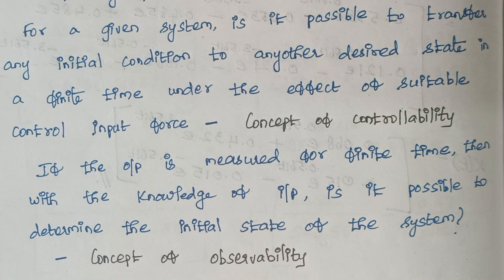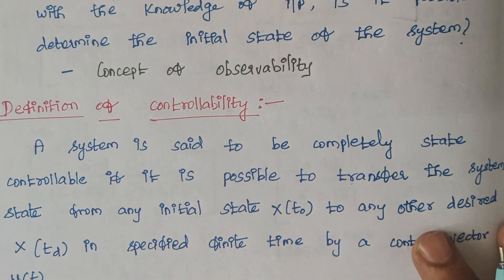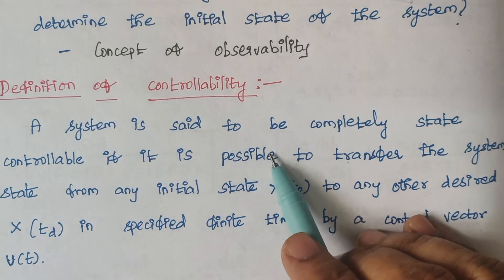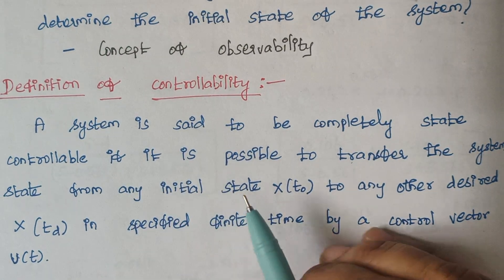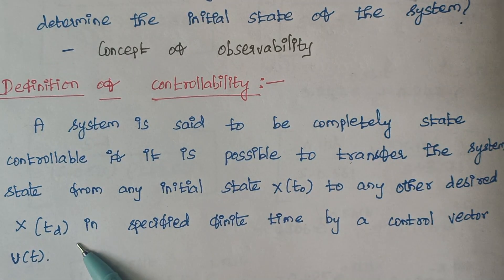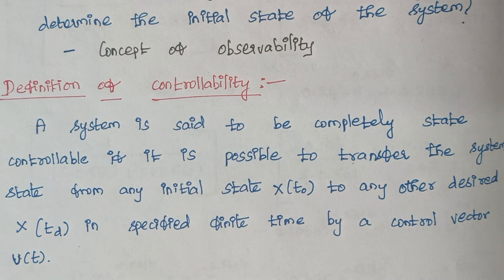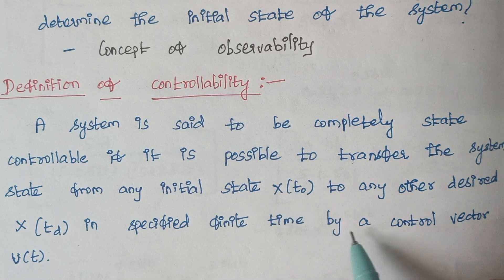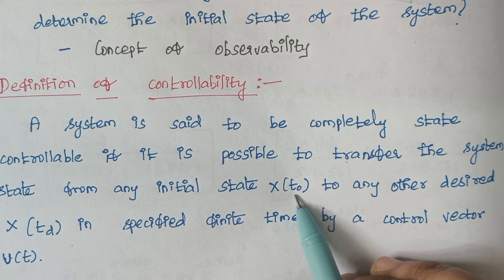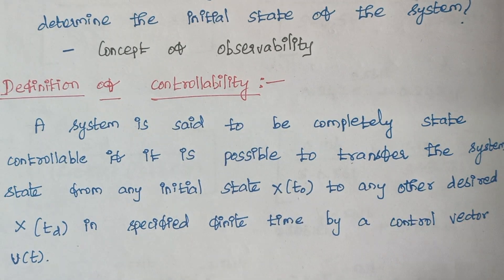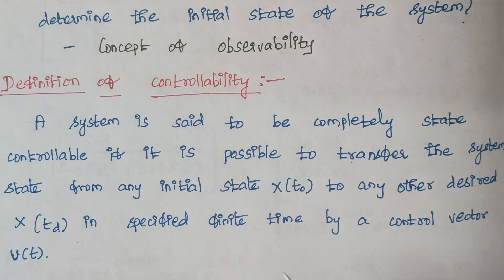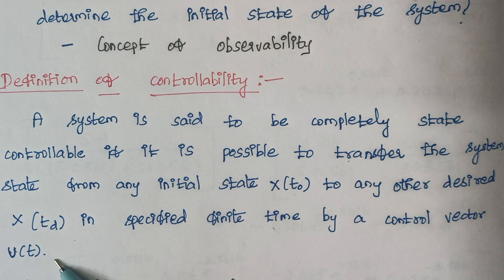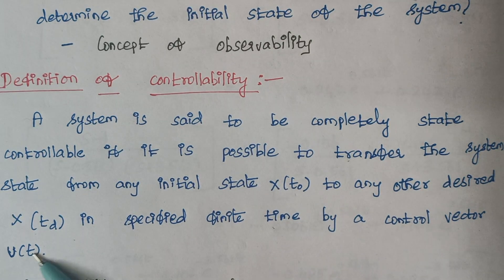So now we are going to discuss these two things in a bit more detail. First, the definition of controllability: a system is said to be completely state controllable if it is possible to transfer the system state from initial state x(t0) to any other desired state x(td) in a specific time interval by a control vector u(t). This is known as controllability, where u(t) is our input.